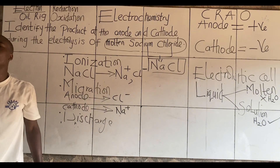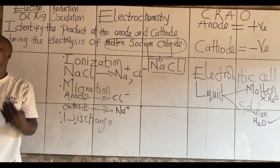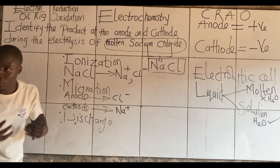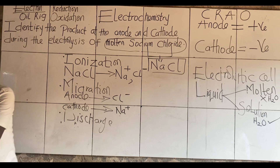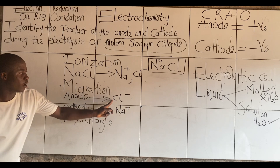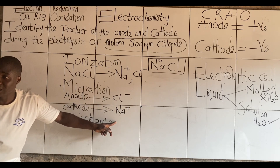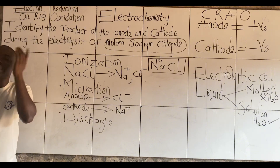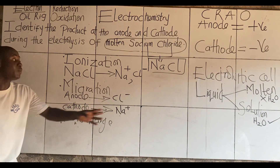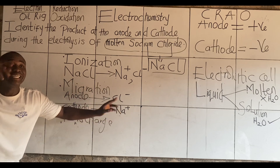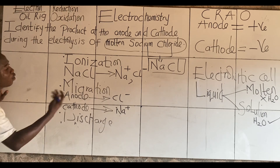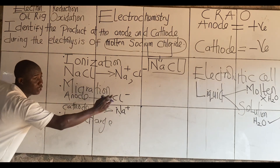When you lose electron — when you lose something, it goes away. But when you gain, it comes to you. So we've migrated them, and the ions we got are Na+ and Cl-. So which of the ions will be discharged? It is simply sodium and chloride that will be discharged.